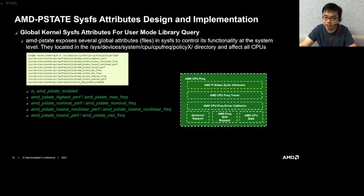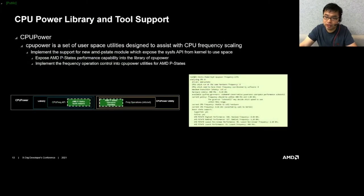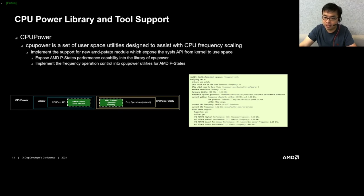The sysfs attribute files are located under the CPUFreq subsystem to affect all CPU cores. They can indicate the highest, nominal, and lowest performance and frequencies. The cpupower tool is a userspace library tool used to query and set CPUFreq APIs. This tool is recommended by the Linux community and widely used by Linux distributions for processor power configuration. We will add two components: AMD P-state performance frequency level handling and AMD P-state sysfs operation handling, allowing users to control the AMD P-state module via cpupower.